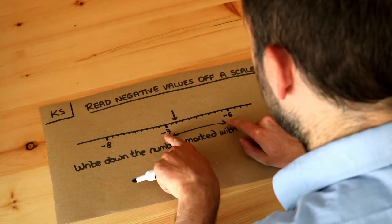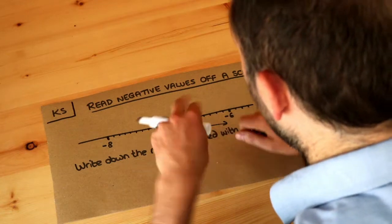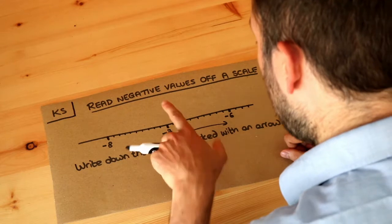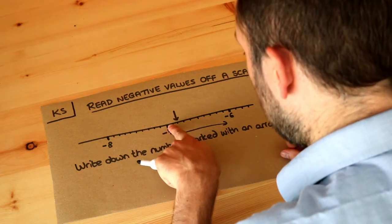We saw in a previous video that what we do is we look at the gap between two numbers on the scale. So you can see this is a distance of one from minus six to minus seven, that's a difference of one, and we split that into how many different regions we see.